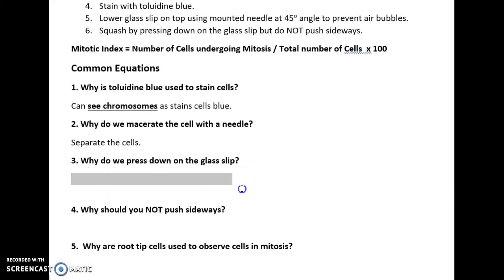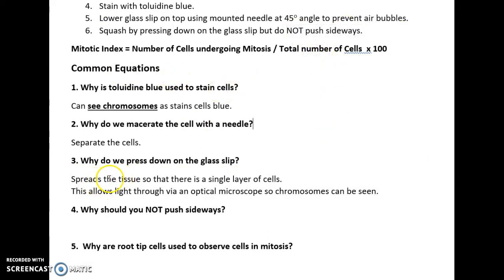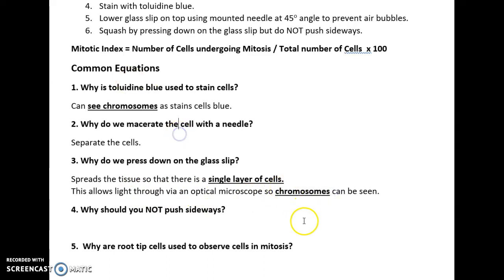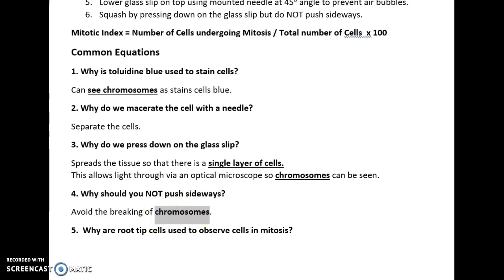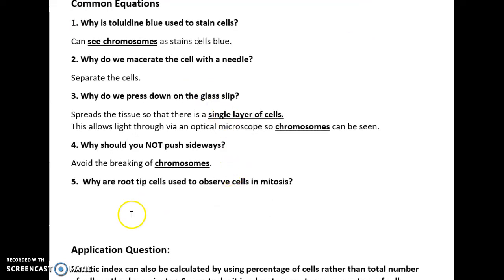Why do we press down on the glass slip? You press down slightly but not sideways — that is to spread the tissue so there is a single layer of cells. Why do we need a single layer of cells? So that light can travel through the optical microscope and chromosomes can be seen. Why do you not push sideways? Because pushing sideways will break the chromosomes. So you do not push sideways to avoid breaking chromosomes — chromosomes is the context, so you must be specific.